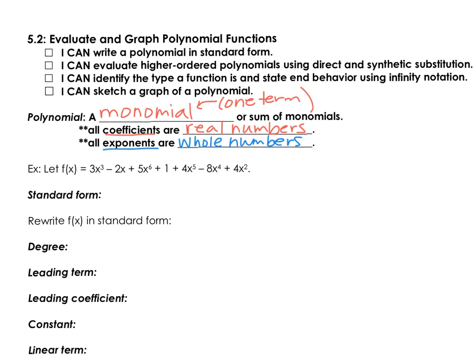The definition of a polynomial is a monomial or sum of monomials. Monomial means one term; polynomial means many terms. In a polynomial function, all coefficients are real numbers — we won't have i or the square root of a negative value as a coefficient. The exponents are all whole numbers; we won't have any exponents that are fractions or negative.